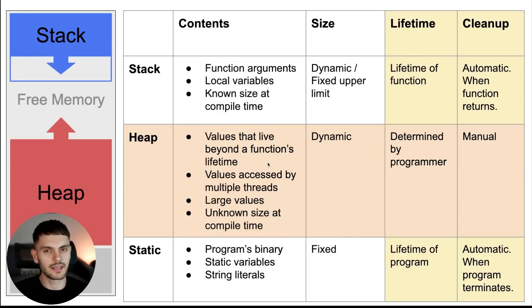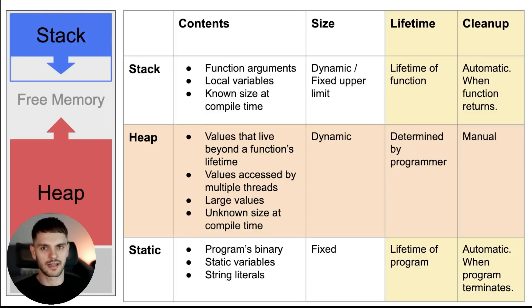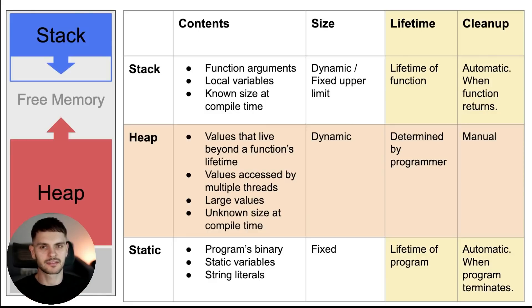Lastly, let's talk about the heap. The heap stores values that need to live beyond a function's lifetime. If you want a value to outlive the function that created it, you can't store it on the stack — it would be destroyed when the function returns — so you store it on the heap. Also, values accessed by multiple threads must be stored on the heap, because each thread has its own stack but all threads share the same heap. The heap is also a good place to store large values: since the stack has a fixed upper limit, large amounts of data could exhaust it, whereas the heap doesn't have a fixed upper bound. Finally, if the size of a value is not known at compile time, it must be stored on the heap. For example, if your program asks users for their name, you don't know how long that name will be, so you don't know the size of the string — therefore you'd store it on the heap.